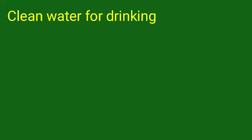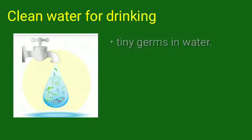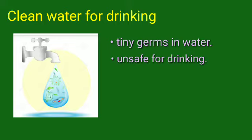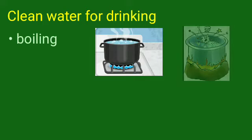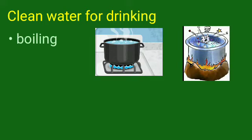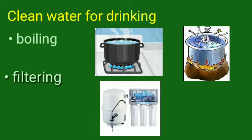To be fit and healthy, we need clean water for drinking. There are very tiny germs in water which are unsafe for drinking. To make the water pure, we have to do certain things. We have to boil water to make it germ-free. If you boil water, the germs are killed. And by filtering water, we can make water pure. So these are the two methods — boiling and filtering — to make water pure and remove the impurities present in water.